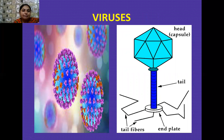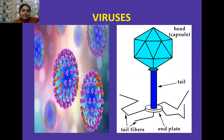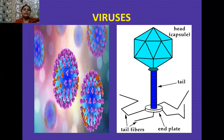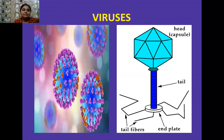Viruses are another type of microorganism. They have two components: a protein coat called capsid, which is made up of very small units known as capsomeres, and a nucleic acid which may be DNA or RNA. On the basis of nucleic acid, these may be DNA viruses or RNA viruses. RNA viruses are also known as retroviruses, and by the process of reverse transcription these viruses convert their RNA into DNA.